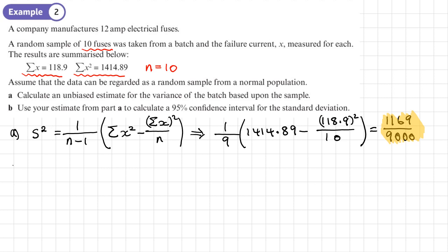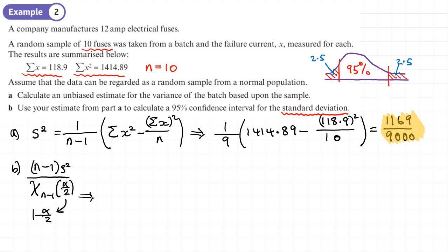Part B says use your estimate from part A to calculate a 95% confidence interval for the standard deviation. So not the variance, but for the standard deviation. Just a reminder about the formula that we need to use to find our confidence limits, which we can use for the confidence interval. You see 95% and you know 2.5%, and then this will be the 97.5. It's all automatic, but maybe the diagram just helps.